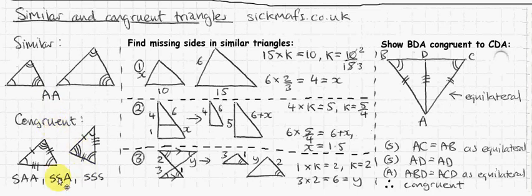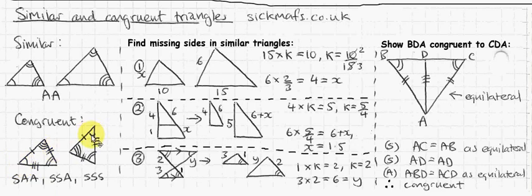For congruent triangles you need to show three things, but you must show that at least one side is the same length. If you only show three angles are the same, the triangles could be similar but not congruent. So any combination of three things — as long as you've got one side — works. For example: one side and two angles, or two sides and one angle.